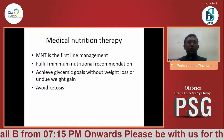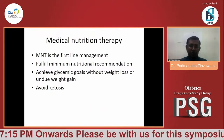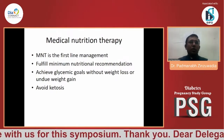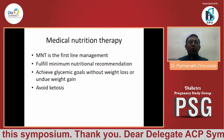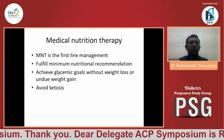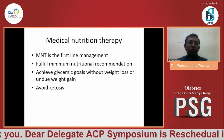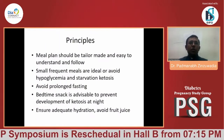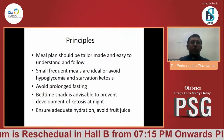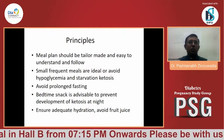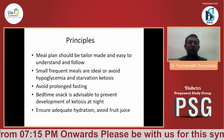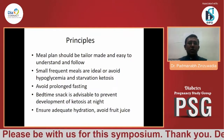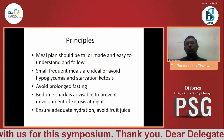When considering therapy for a GDM patient, glycemic control cannot be achieved without medical nutrition therapy (MNT). MNT is the first line of management. It should fulfill minimum nutritional recommendations and achieve glycemic goals without weight loss or undue weight gain, and ketosis must be avoided. The meal plan should be tailor-made and easy to understand. Small frequent meals are ideal to avoid hypoglycemia and starvation ketosis, and prolonged fasting should be avoided.